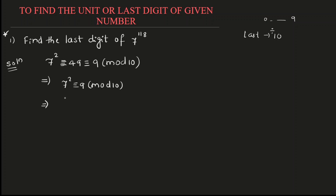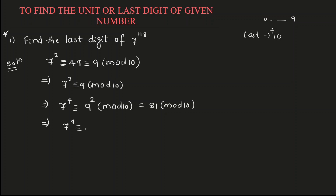Now, again, double this — from power 2 to power 4. So, 7 raised to 4 is congruent to 9 squared mod 10, which is 81 mod 10. When divided by 10, the remainder is 1. So, 7 raised to 4 is congruent to 1 mod 10.